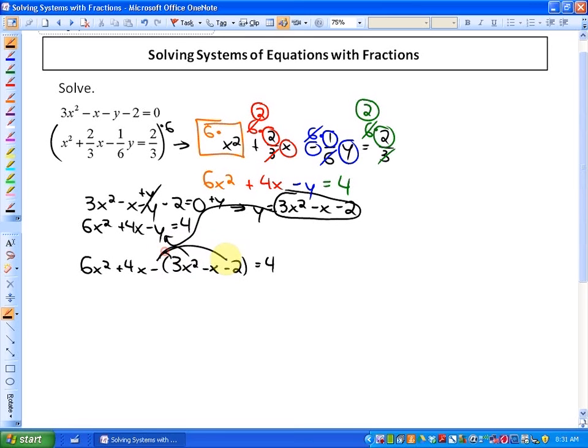After I expand that and put it into standard form, you'll see that it is factorable. So it's going to be -3x² + x + 2 = 4. After I subtract 4 from both sides to put it into standard form and collect my like terms, 6x² - 3x² makes 3x², 4x + x makes 5x, and 2 - 4 makes -2, and that equals 0.